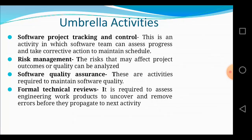The next topic is Umbrella Activities — activities performed throughout the entire software development process. The first is software project tracking and control, where the software team assesses progress and takes corrective actions. Similar to tracking an online order, in software development you assign tasks by day (e.g., Monday to Friday) and track whether each task is completed on time.